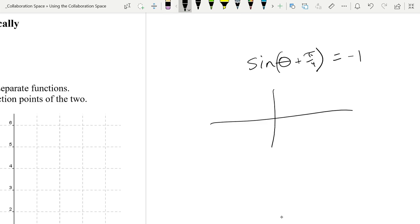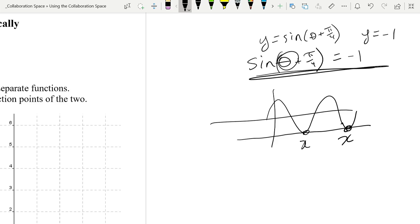And we solved that by graphing the sine of theta plus pi by 4, which would be something like this. And then solving for when it met the line. So we made y equals the sine of theta plus pi by 4, and we made the line y equals negative 1. And the place where those graphs meet, the x coordinates are the solutions, in this case for theta.